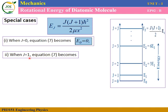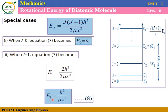For J equals 1: E1 equals 1 times (1+1) times h-cross squared divided by 2 mu x squared. That gives 1 times 2 equals 2, and the factor of 2 cancels, so E1 equals h-cross squared divided by mu x squared. This is equation number eight.